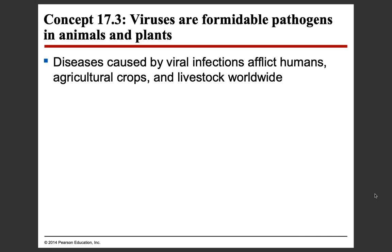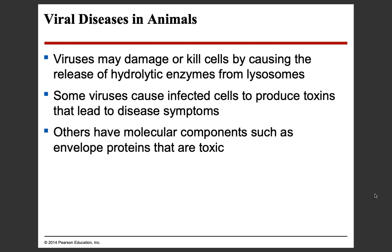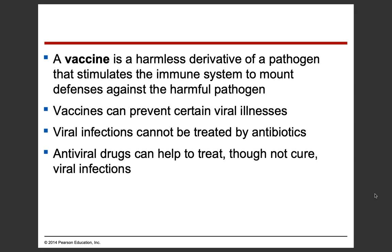Viruses are formidable pathogens in animals and plants. Diseases caused by viral infections can affect humans, crops, and livestock. Sometimes you'll hear about a zoonotic disease — a disease that started in animals and can jump to humans — like H1N1 swine flu or the avian flu. These things originated in livestock and then moved into humans. Viruses can damage or kill cells by causing the release of hydrolytic enzymes from lysosomes, and some viruses cause infected cells to produce toxins that lead to disease symptoms that can spread throughout the body. Others have molecular components such as envelope proteins that are toxic.